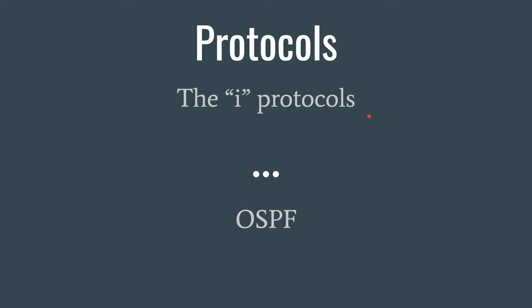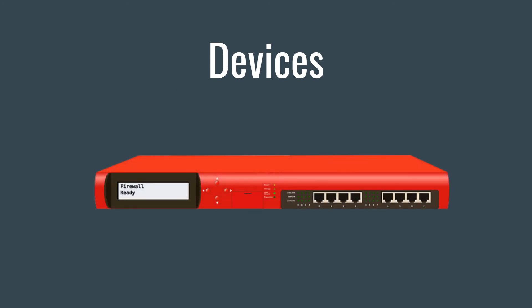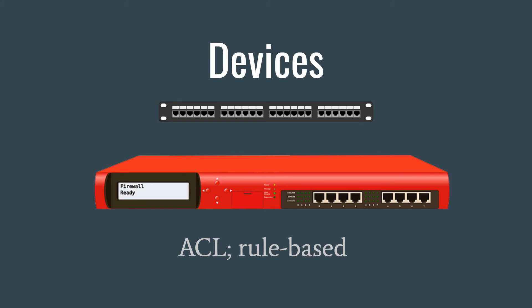Protocols at layer 3 include the 'I' protocols — IGMP and ICMP. As Kelly Handerhan from Cybrary noted, the only 'I' protocol that would not belong at layer 3, at least for the exam, would be something like IMAP. You also have OSPF — open shortest path first. The devices at layer 3 are firewalls and routers, which are rule-based and use access control lists, or ACLs.